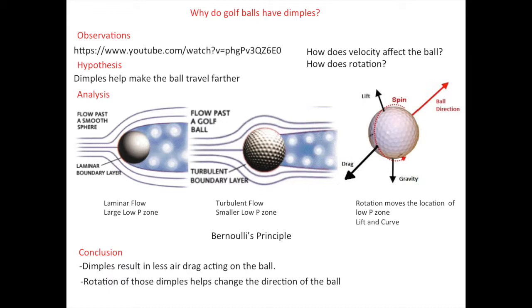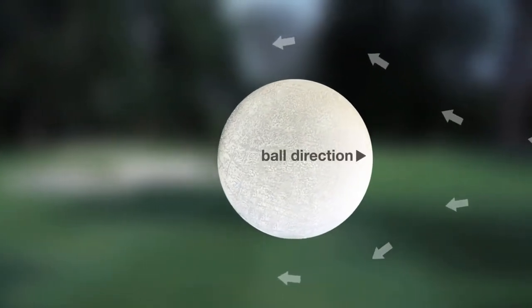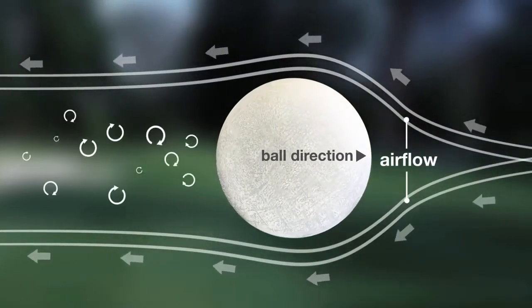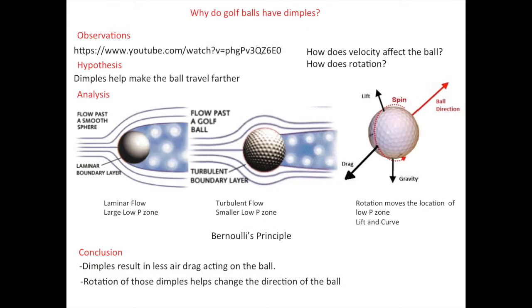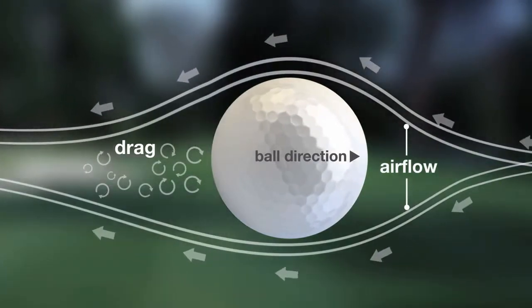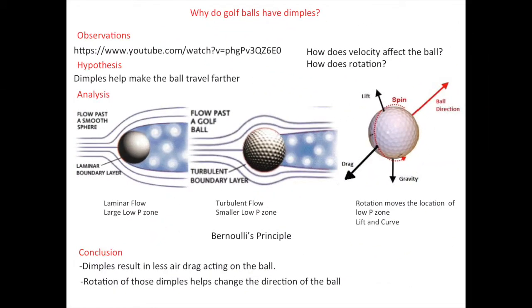A ball with dimples does help it travel farther. A ball with a smooth surface creates a laminar flow which results in a large low-pressure zone behind the ball. This causes a large magnitude of air drag acting on the ball. A dimpled ball creates a layer of turbulent air. This layer allows the air to stay tighter to the ball. The air hits a dimple, comes out of the dimple, and travels up and out to the next. This process keeps repeating, allowing for a smaller wake in the air, which allows for a smaller low-pressure zone, making the ball travel farther.